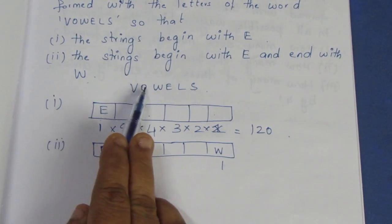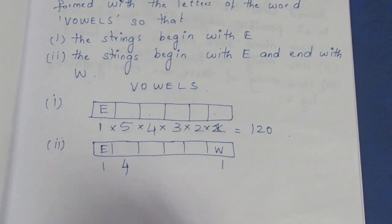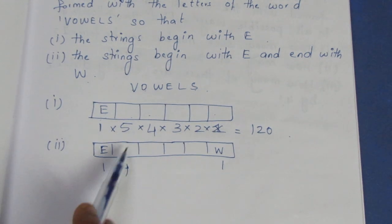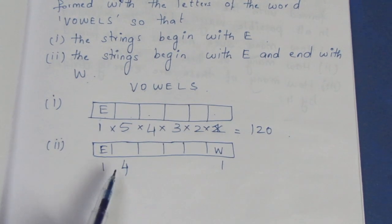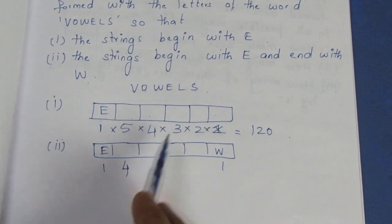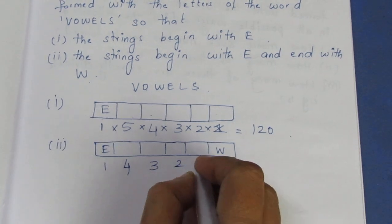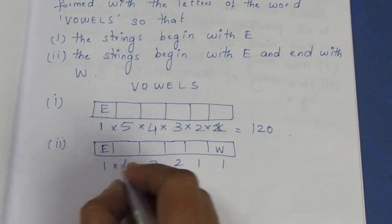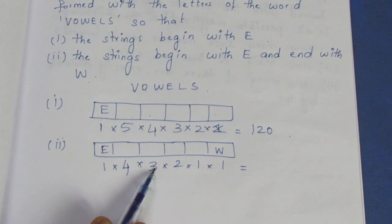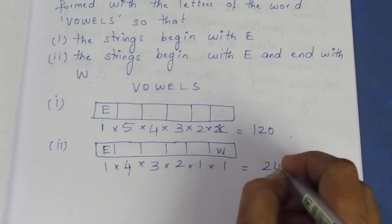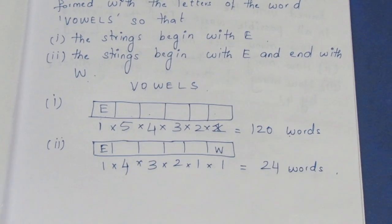With E and W fixed, the remaining 4 positions can be filled with 4 letters, then 3, then 2, then 1. Multiplying: 4 × 3 = 12, 12 × 2 = 24. So the answer for the second condition is 24 words.